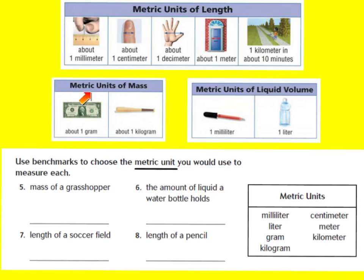Now let's move on to metric units of mass. In metric units we only measure in two types: the gram and the kilogram. A gram is about the weight of a dollar bill. Some people also say a gram is about the weight of a paper clip. A kilogram is about the weight of a baseball bat — if you've ever picked one up and felt it, that's about a kilogram.